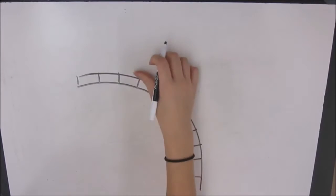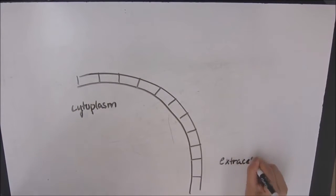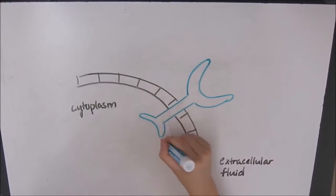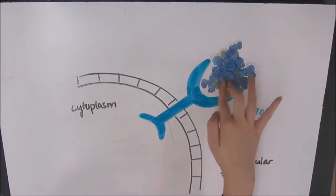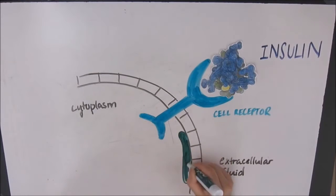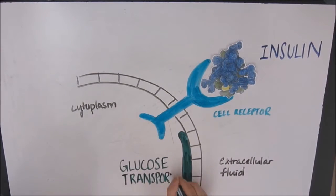The pancreas secretes insulin into the bloodstream when blood glucose levels rise. Insulin travels to the body's cells and triggers them to increase glucose uptake by attaching to cell surface receptors and activating glucose transporters which allows glucose to pass through the cell membrane.